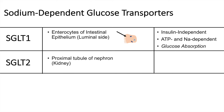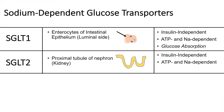SGLT2 is found in the proximal tubule of a nephron, the functional unit of the kidney. These are also insulin independent and ATP and sodium dependent. They are very important for glucose retention — they prevent you from losing glucose in your urine. This becomes relevant in diabetes, when blood glucose levels are so high that these transporters become saturated, and glucose is actually lost in the urine, which is why you get glycosuria.